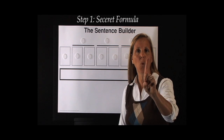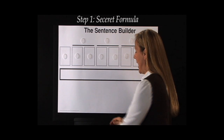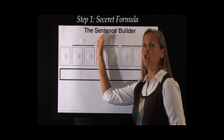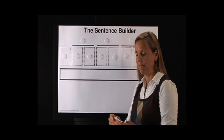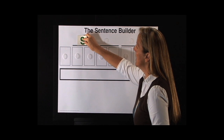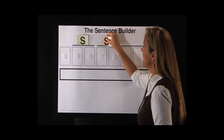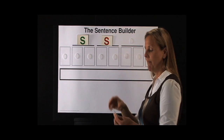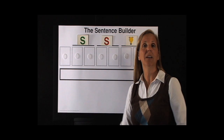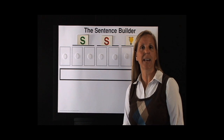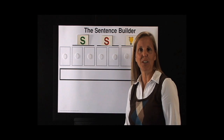Step one: secret formula time. We're going to have a secret formula that students can learn in order to write a topic sentence or thesis statement. That secret formula is S, S, and a light bulb — notice green and red. SS lightbulb is our secret formula for a topic sentence or thesis statement.